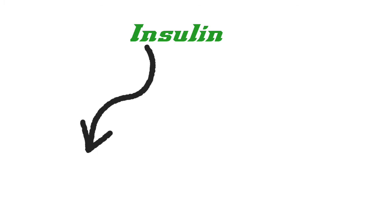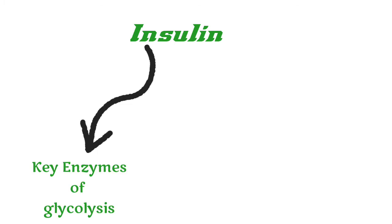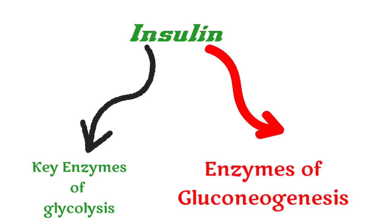An example of enzyme regulation by induction and repression is insulin. Insulin increases the concentration of key enzymes of glycolysis, whereas it decreases the concentration of key enzymes of gluconeogenesis. So insulin is inducing the enzymes of glycolysis while repressing the enzymes of gluconeogenesis.